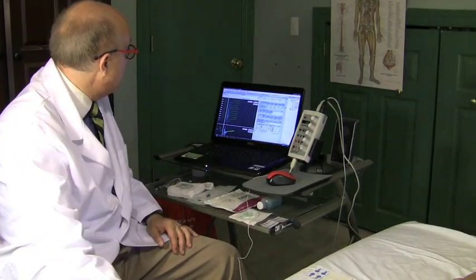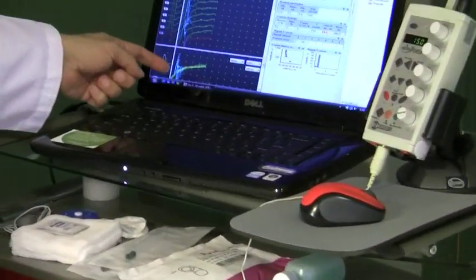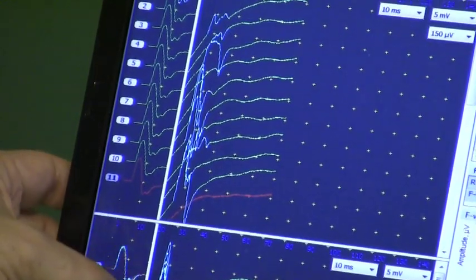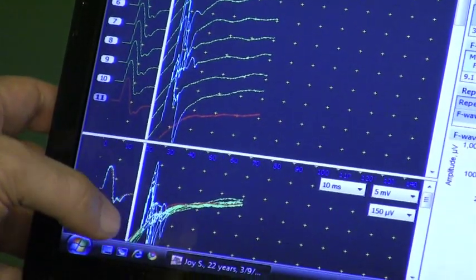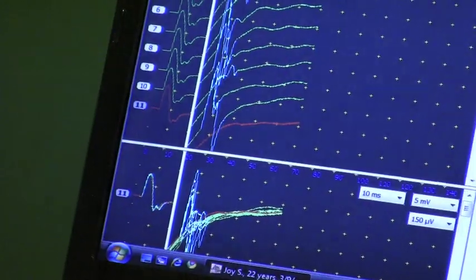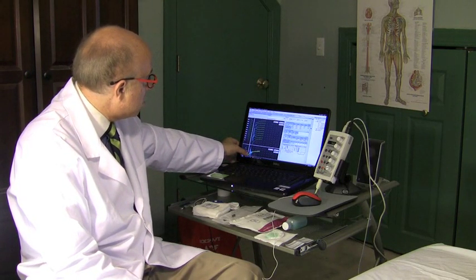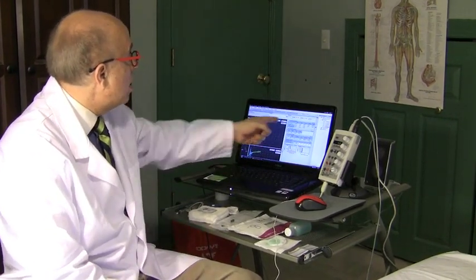So now I'm going to analyze them, and the computer now here has superimposed them. It just tells you that the shortest latency F wave is probably this one right here. The computer automatically measures it and gives you the shortest latency F wave. When we superimpose them, we can see which one is the earliest one and which one is the latest one. That's why we superimpose them, and the computer measures that automatically and tells you what it is.